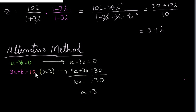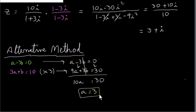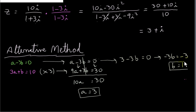Multiply the bottom equation by 3 to get 9a plus 3b equals 30, so the 3b terms cancel when added to the top equation. Adding: 1a plus 9a is 10a, the b terms cancel, and 0 plus 30 is 30. So a equals 30 divided by 10, which is 3. To find b, use the top equation with a equals 3: 3 minus 3b equals 0, so minus 3b equals minus 3, giving b equals 1. So a is 3 and b is 1, meaning z equals 3 plus i. That's an alternative method, though probably more involved than the first.